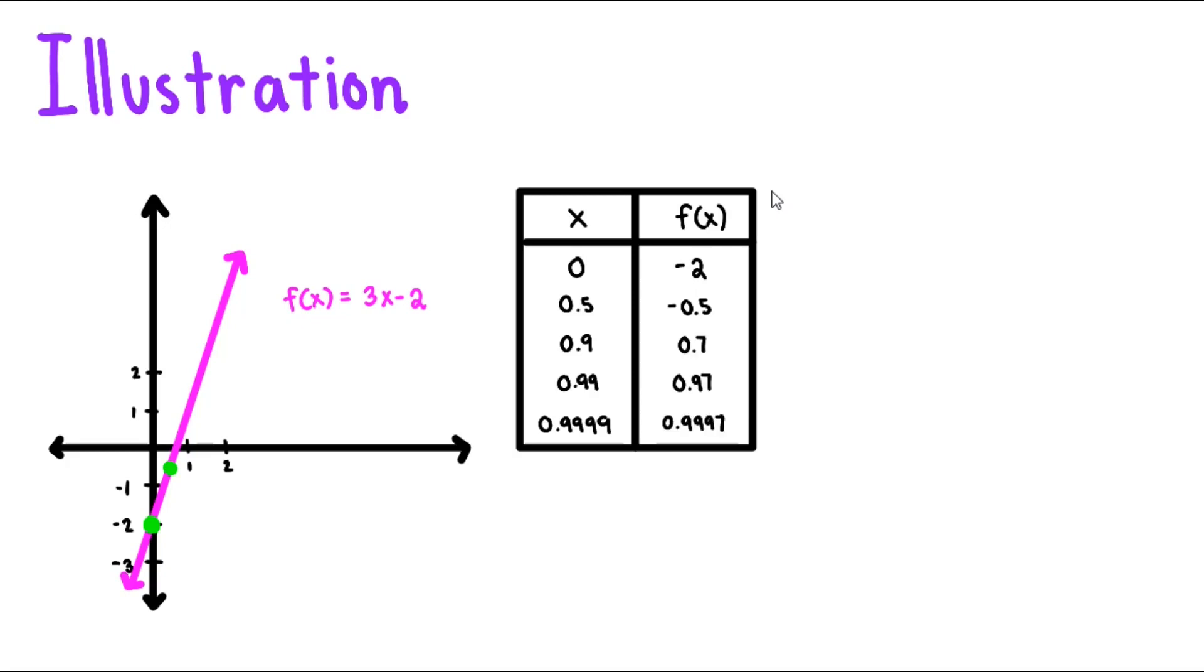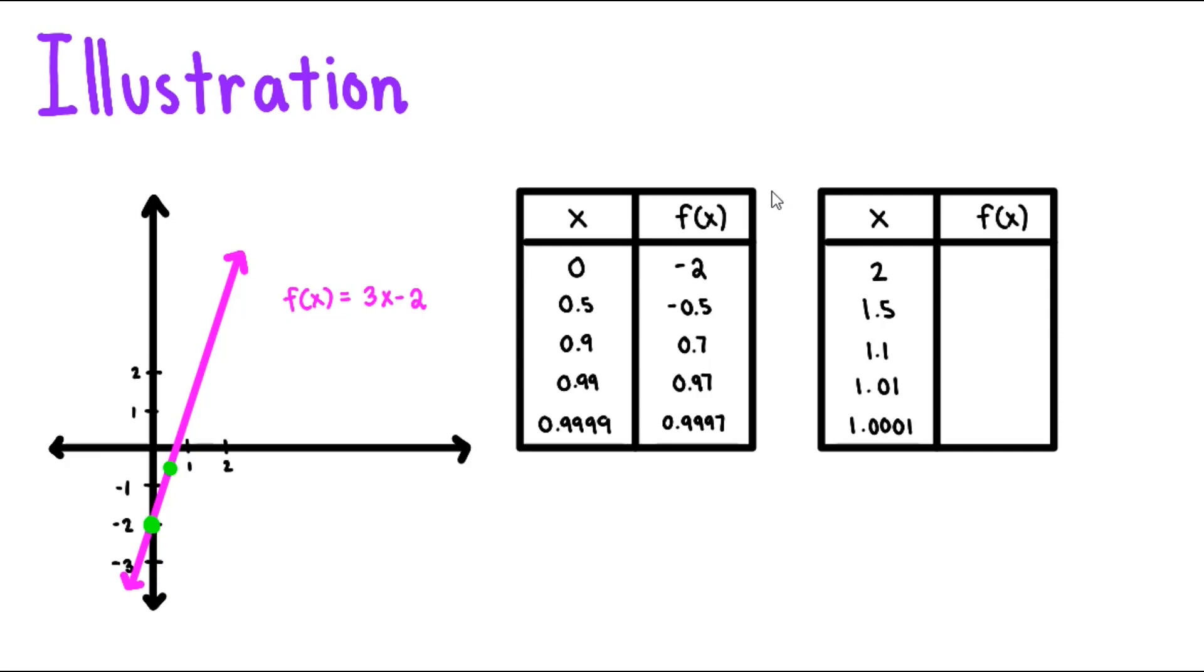Similarly, we consider the values from the right of 1. At x equals 2, we plug in 2 to obtain 3 times 2 minus 2, which gives us 6 minus 2 which is 4.